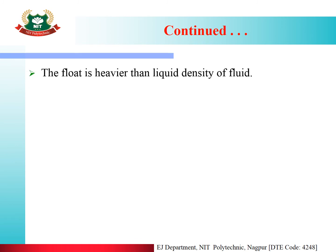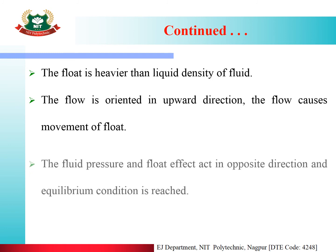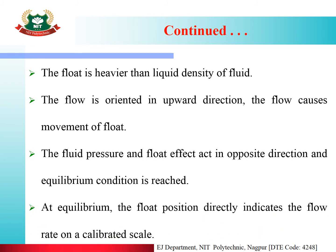The float is heavier than the liquid density of the fluid. The flow is oriented in the upward direction, causing movement of the float. The fluid pressure and float effect act in opposite directions, and an equilibrium condition is reached. At equilibrium, the float position directly indicates the flow rate on a calibrated scale.